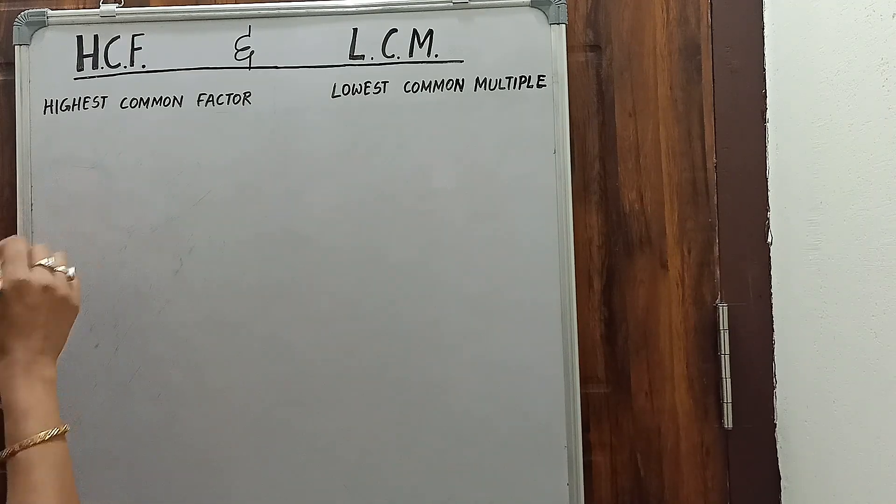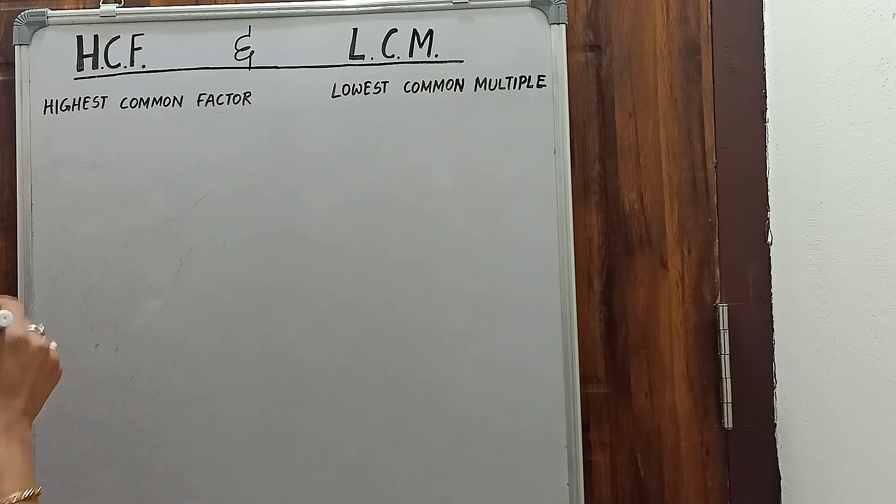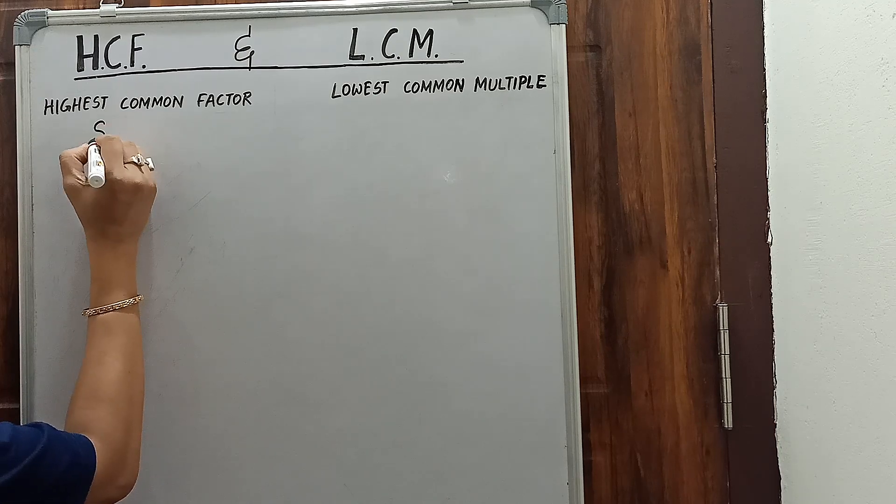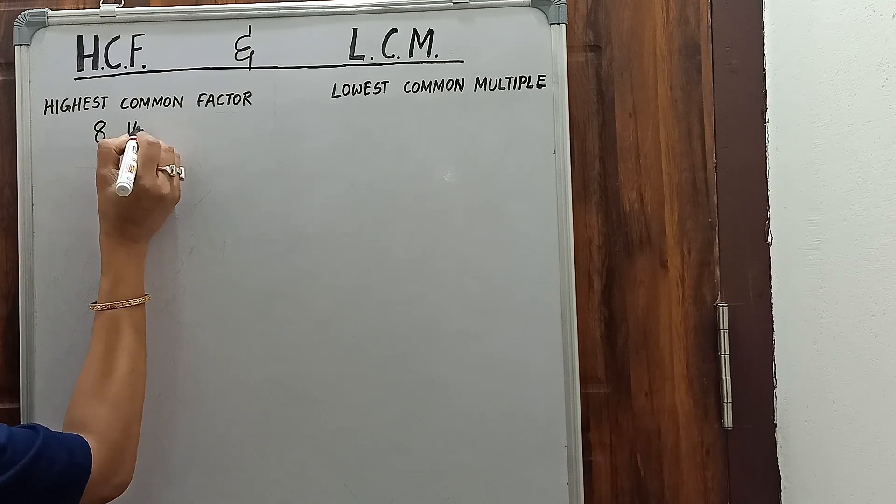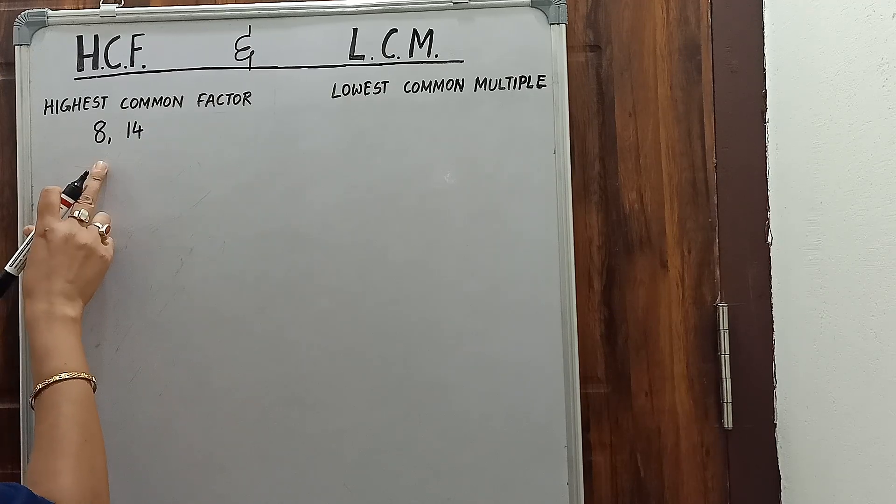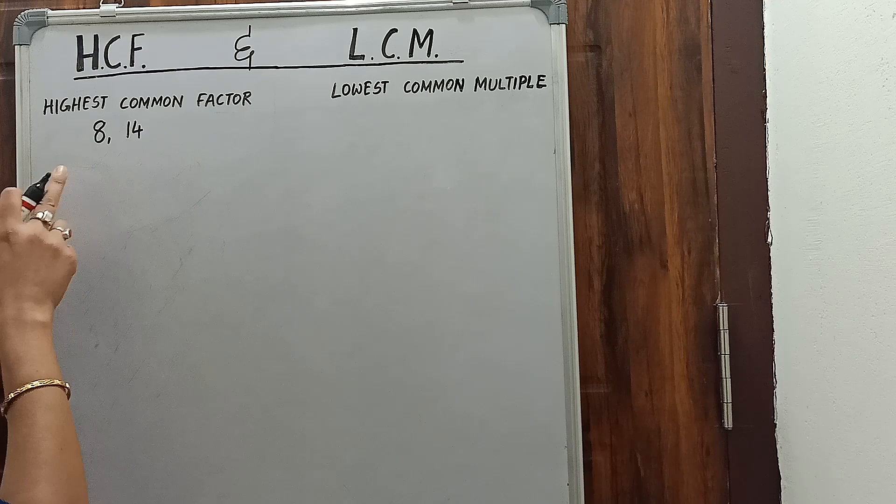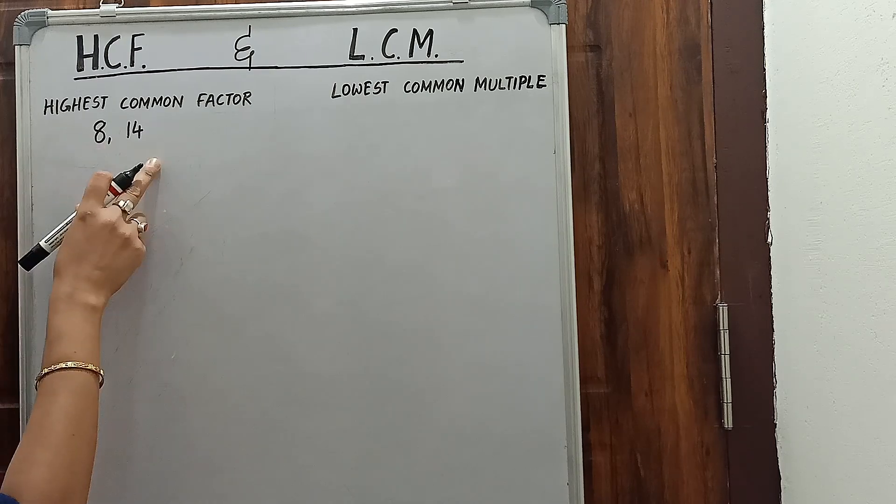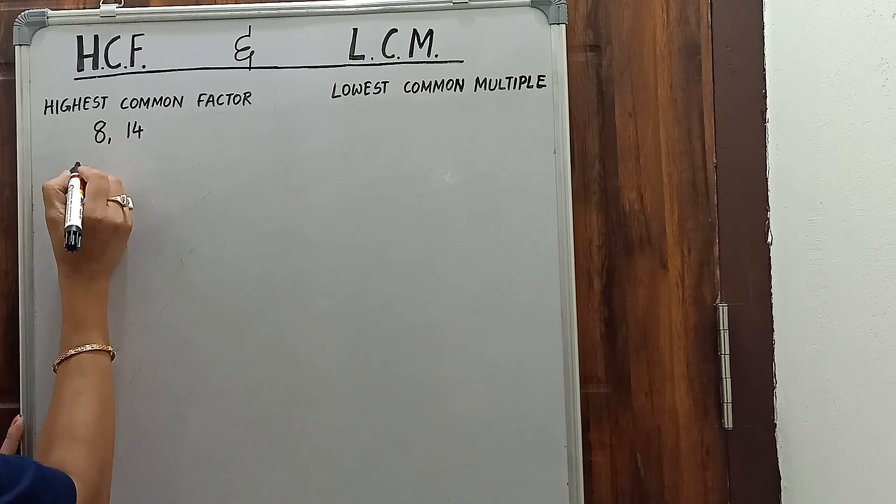First of all, let us find the Highest Common Factor of numbers. Let us take any two numbers. I have taken 8 and 14. You can take two numbers or three numbers. To find the highest common factor, we have to find the factors of these two numbers.